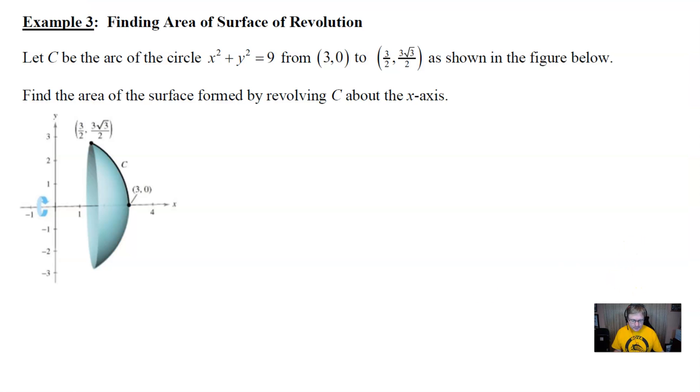Let's go ahead and take a look at our example 3. It is a non-calculator question so we should be able to integrate this by hand. It says let C be the arc of a circle and that circle would be x² + y² = 9 from (3,0) all the way up to this really creepy looking ordered pair (3/2, 3√3/2) as shown in the figure. Find the area of the surface formed if we revolve C about the x-axis. And I went ahead and captured this picture so that you could see what's going on. We sort of have this bowl shape and we're going to find out how much space is around the outside of this.